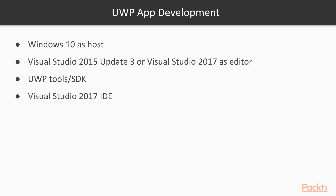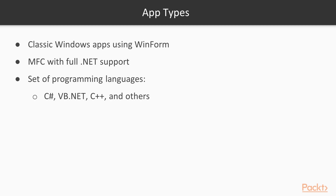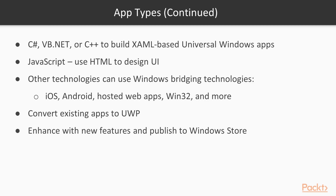We are going to use Visual Studio 2017 IDE in this course. You can choose the traditional Windows desktop apps called classic Windows apps using WinForm and MFC with full .NET support. You can choose between programming languages such as C#, VB.NET, C++ and others to build classic apps. For UWP, you can use C#, VB.NET or C++ to build XAML-based universal Windows apps. If you are a JavaScript lover, you can use HTML to design the UI, and this type of application can run across all Windows 10 devices.